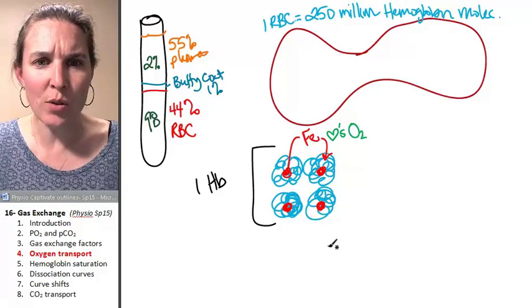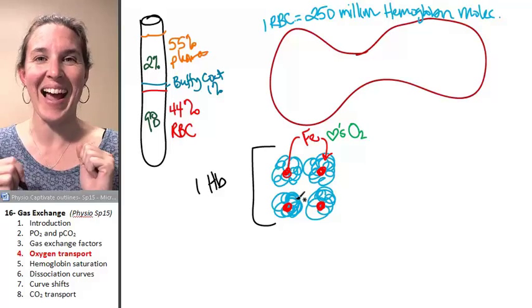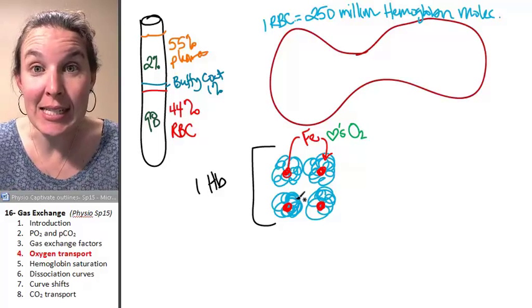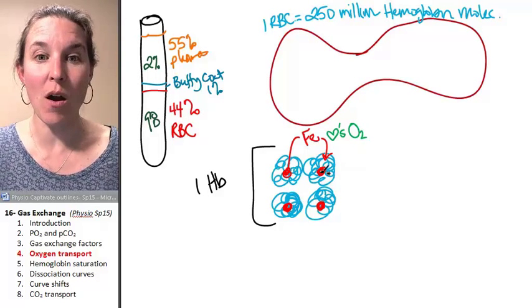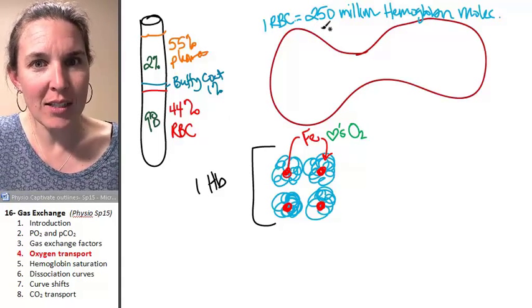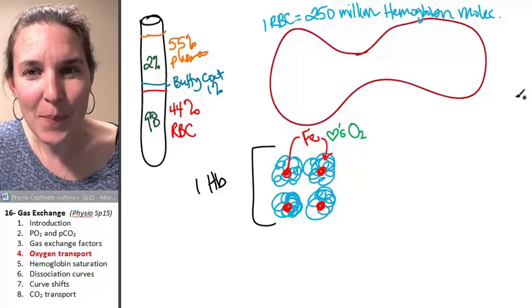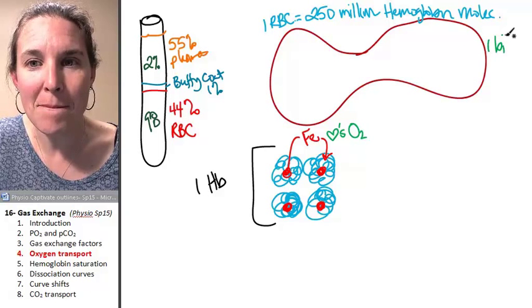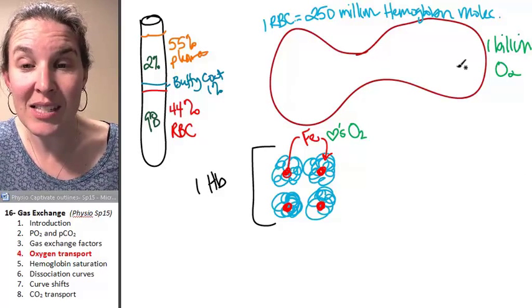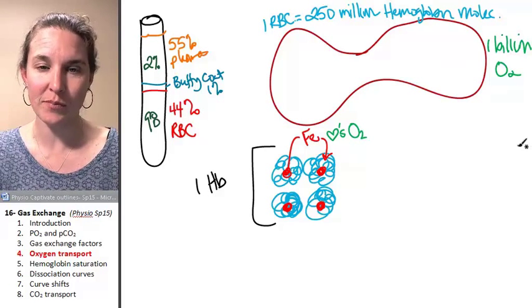So oxygen literally will stick to the iron found in each subunit of the hemoglobin molecule. So how many molecules of oxygen can be carried in one hemoglobin molecule? Four. I like to think of it as like a bus. And each iron atom is like a seat for an oxygen atom. And so there are four seats for oxygen here. However, there are four seats on each one of our 250 million hemoglobin molecules. So one red blood cell could carry one billion oxygen molecules. There's like a billion seats for hemoglobin in this one red blood cell.